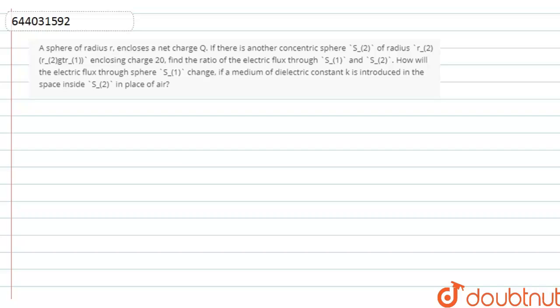The question is: a sphere of radius R encloses a net charge Q. If there is another concentric sphere S2 of radius R2 enclosing a charge 2Q, find the ratio of the electric flux through S1 and S2. How will the electric flux through sphere S1 change if a medium of dielectric constant K is introduced in the sphere inside S2 in place of air?